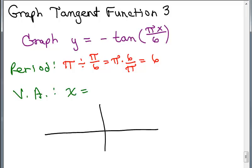Remember the tangent of 0 is 0. We're going to have that point in the middle, 0, 0. That means the asymptotes are going to be half of that way to the right and half of that way to the left. So if this is 3 and this is negative 3, we have a full period of 6. So that's where our asymptotes are going to go.